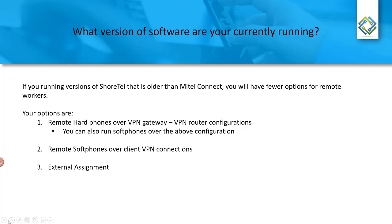For older ShoreTel, you'll have remote hard phones and soft phones over a VPN gateway, typically defined as a branch tunnel — a hardware device at the remote location that connects to your headquarters VPN or SSL concentrator. You can also run remote soft phones over VPN connections if you've deployed VPN software clients; users with the right access can open their communicator or ShoreTel client and run a soft phone. The last option is external assignment, which is also available in the system.